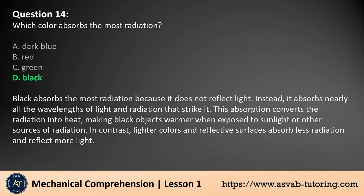The answer is D. Black absorbs the most radiation because it does not reflect light. Instead, it absorbs nearly all the wavelengths of light and radiation that strike it. This absorption converts the radiation into heat, making black objects warmer when exposed to sunlight or other sources of radiation. In contrast, lighter colors and reflective surfaces absorb less radiation and reflect more light.